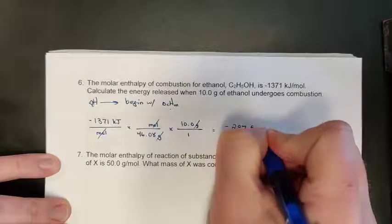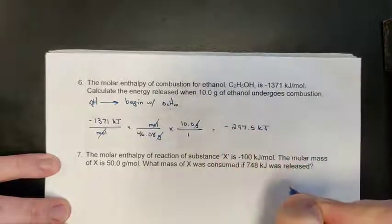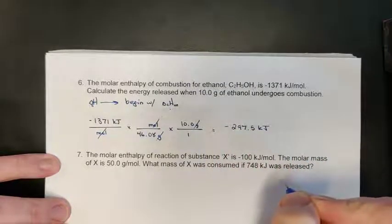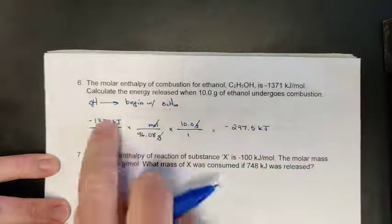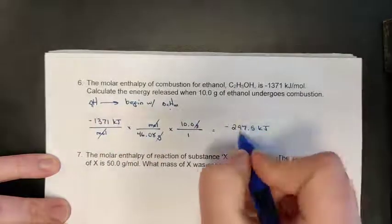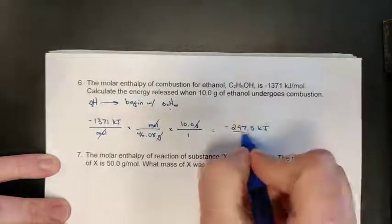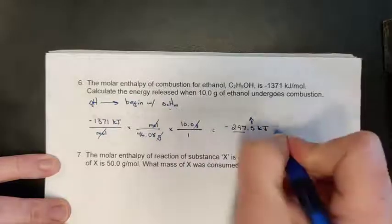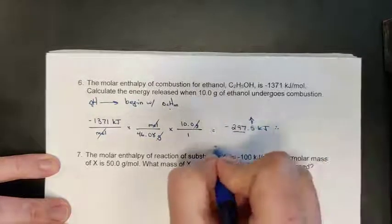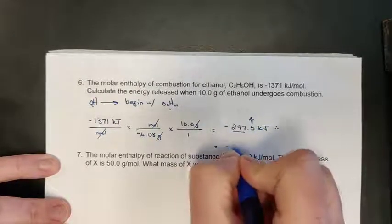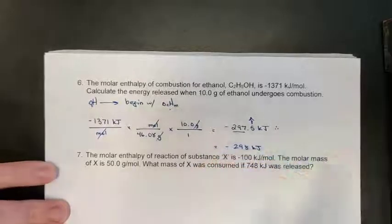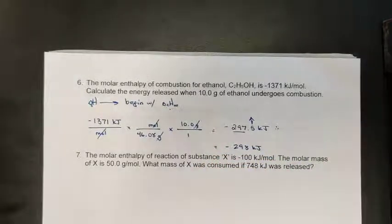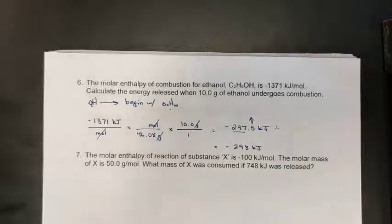The calculation gives negative 297.5 kJ of energy released when 10 grams of ethanol is burned. With three significant figures as the limit, the five rounds up, giving a final answer of negative 298 kJ — exothermic, which makes sense when we burn something.